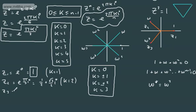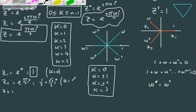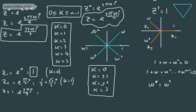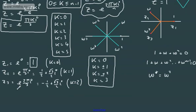For k=2: z3 = e to the 2πi/3, giving −½ + (√3/2)i. For k=3: z4 = ω³ = e to the iπ, which gives the interesting result of −1 (Euler's identity). For k=4: z5 = ω⁴ = e to the 4πi/3, giving −½ − (√3/2)i.